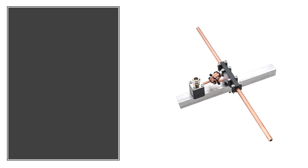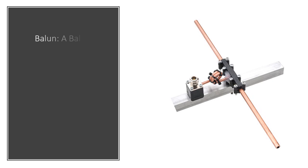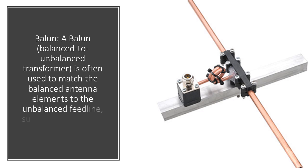A balun (balanced-to-unbalanced transformer) is often used to match the balanced antenna elements to the unbalanced feed line, such as coaxial cable.